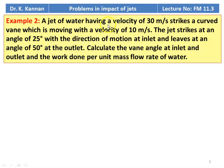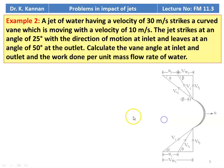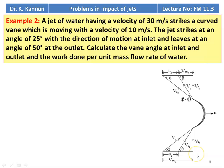Example number 2. A jet of water having a velocity of 30 m/s strikes a curved vane which is moving with a velocity of 10 m/s. The jet strikes at an angle of 25 degrees with the direction of motion at the inlet and leaves at an angle of 50 degrees at the outlet. Calculate the vane angle at the inlet and the outlet, and the work done per unit mass of water. This is the velocity triangle for the curved blade moving with velocity U. The fluid enters with absolute velocity V1, which has two components: Vf1 (flow direction) and Vw1 (tangential).